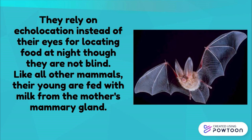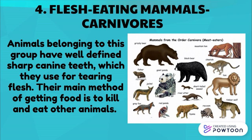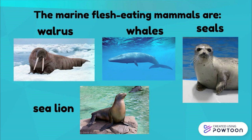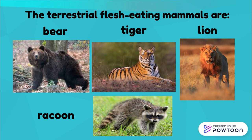Flesh-eating mammals, or carnivores, have well-defined, sharp canine teeth which they use for tearing flesh. Their main method of getting food is to kill and eat other animals. Marine flesh-eating mammals include walruses, whales, seals, and sea lions. Terrestrial flesh-eating mammals include bear, tiger, lion, and raccoon.